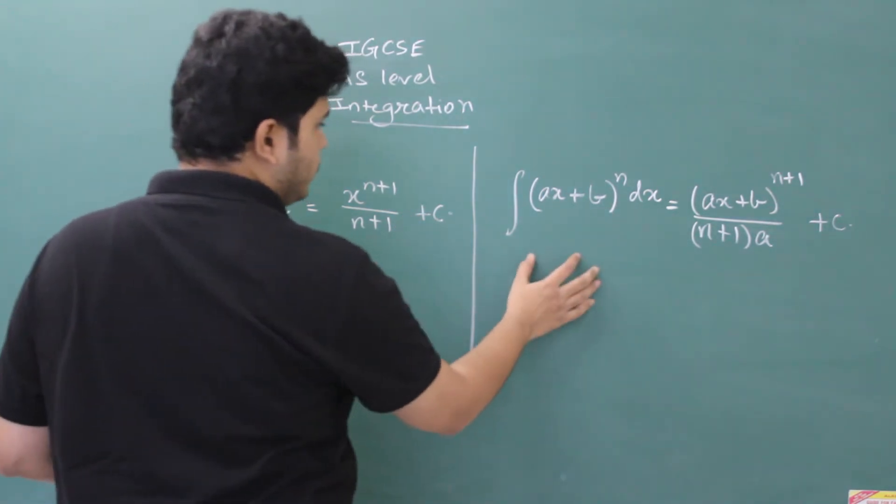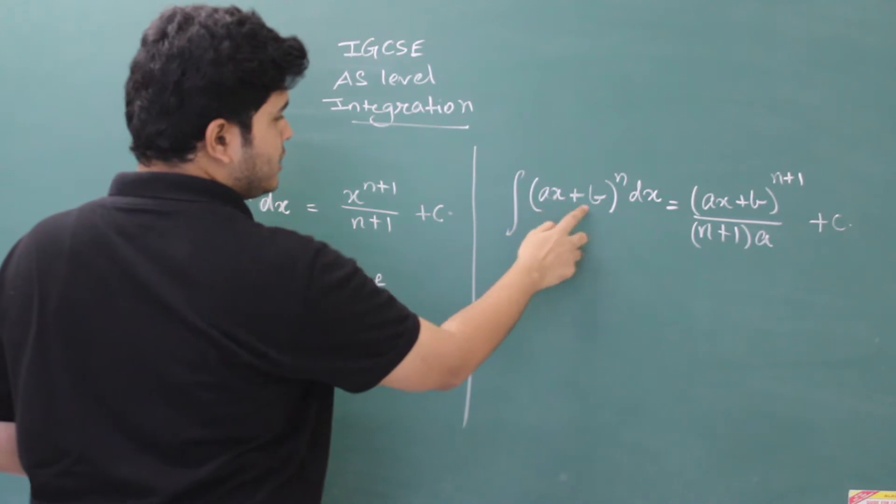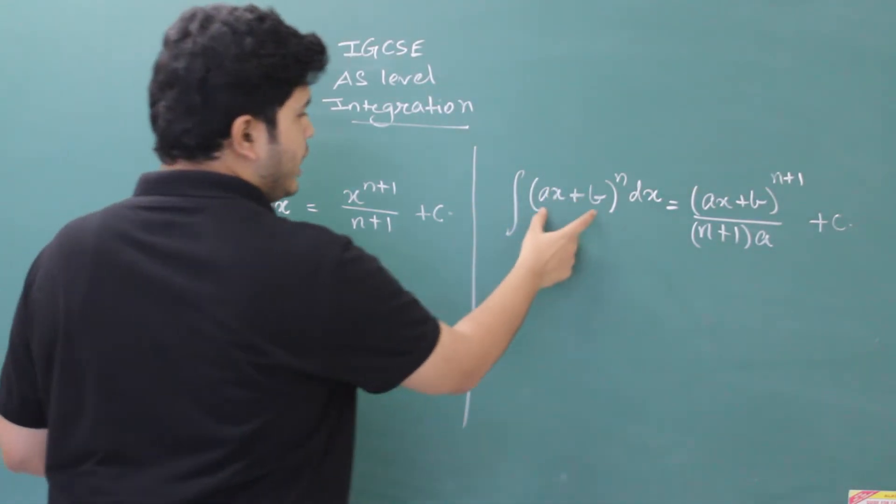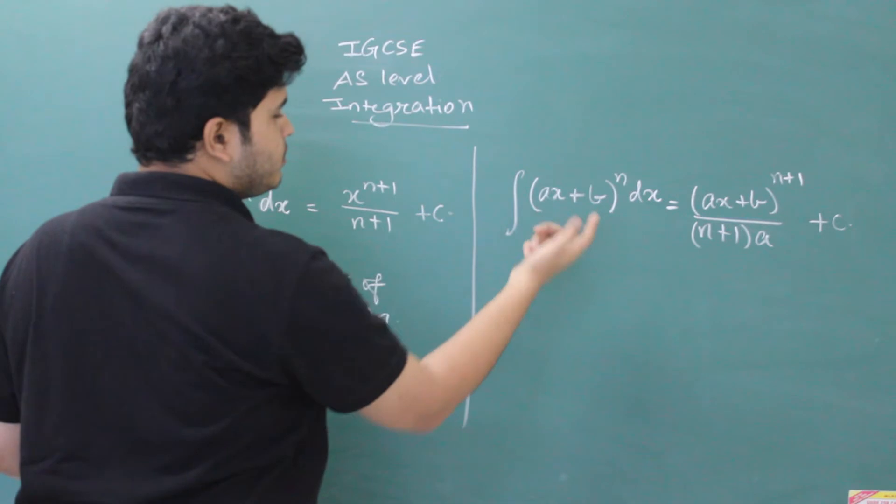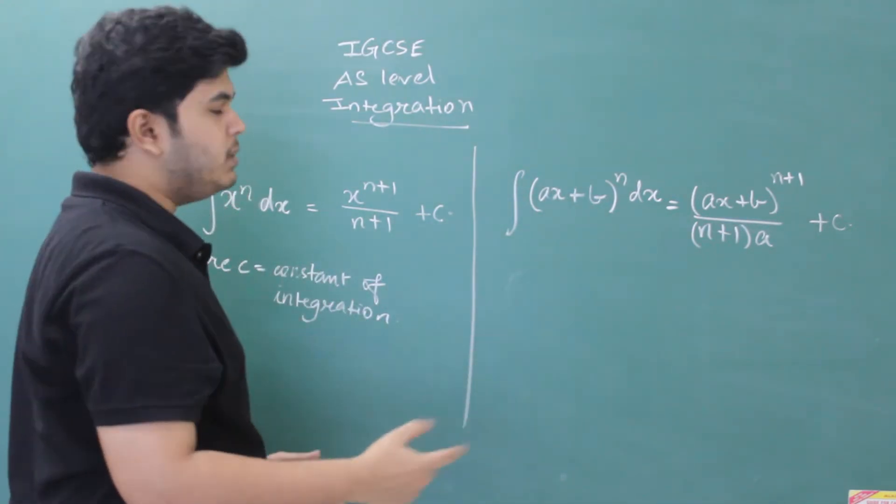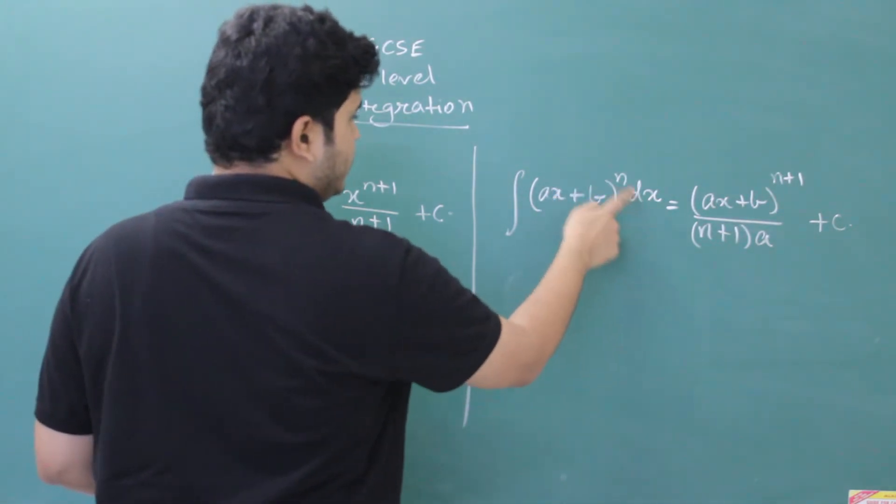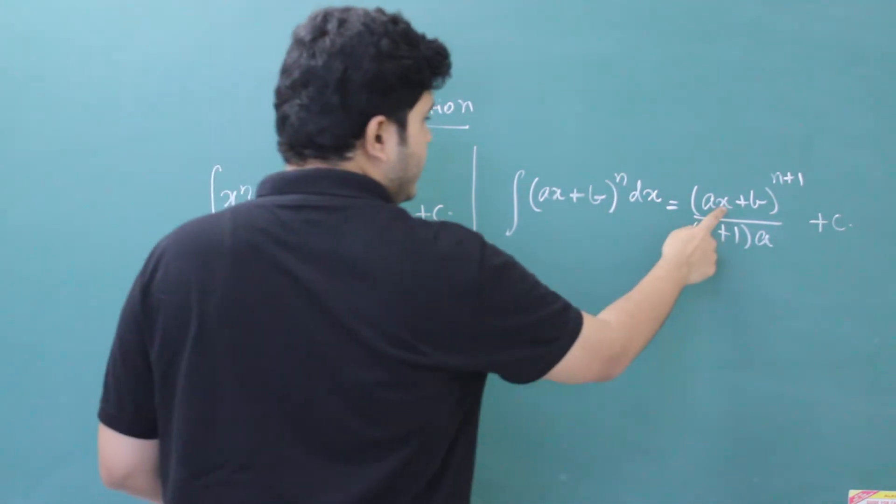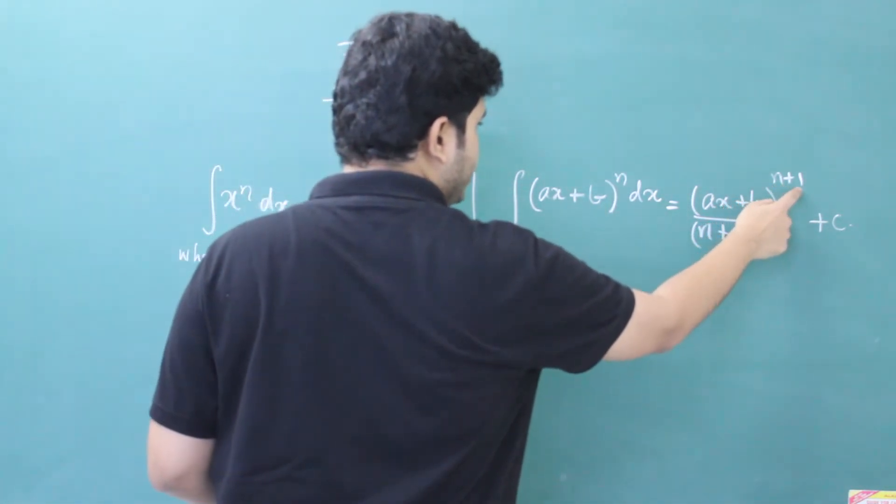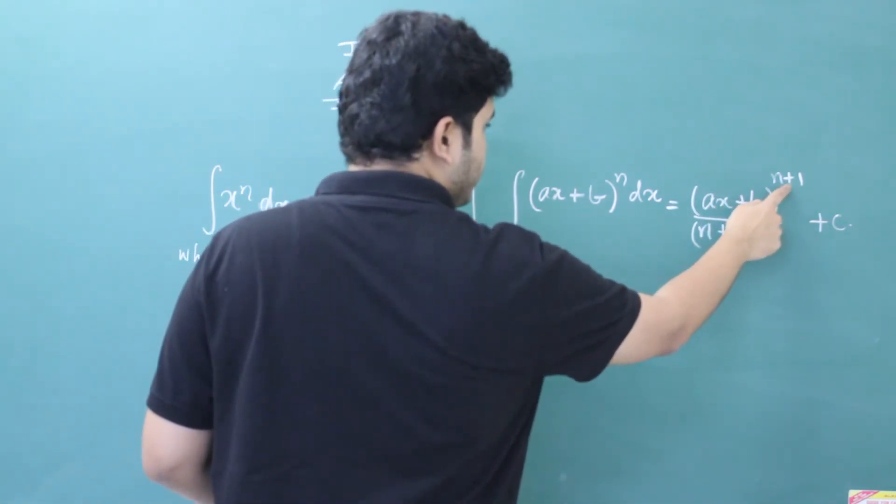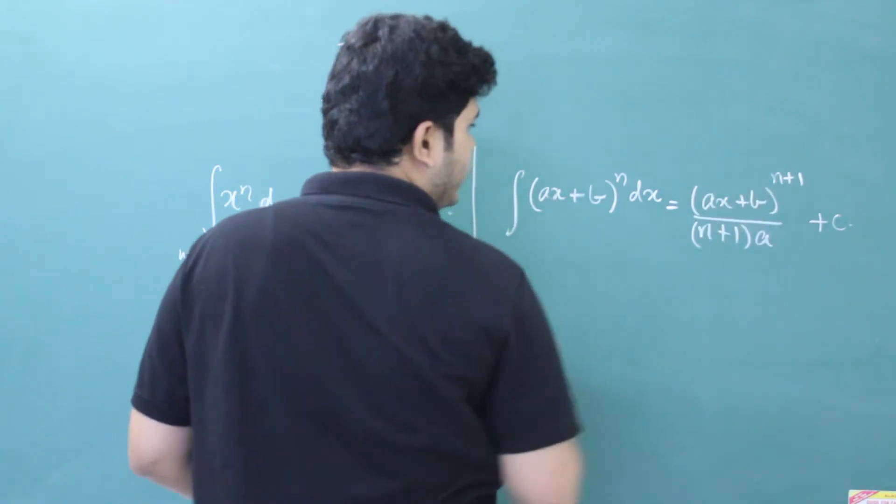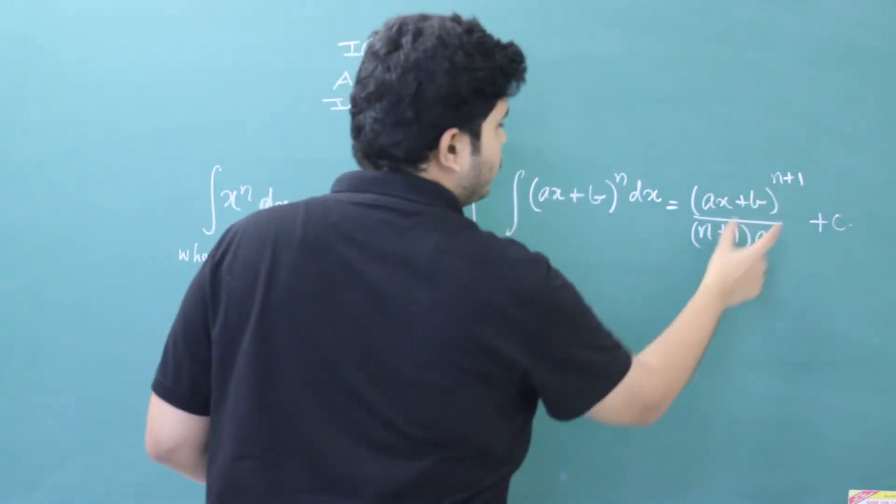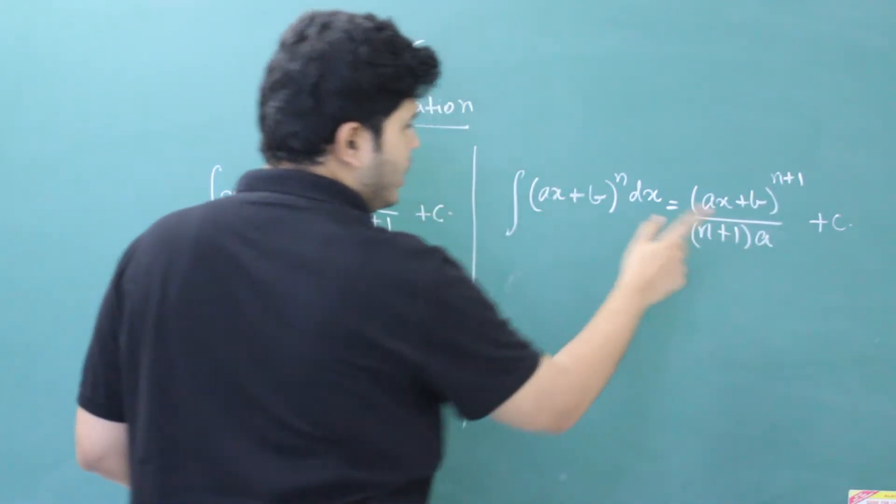Now let's move to another formula. Integral ax plus b, for example you are having any term in this form, ax plus b, that means 2x plus 3 maybe, to the power n is integrated with respect to dx. Then what you will have is ax plus b to the power n plus 1. You will add power by 1 in power of this part, ax plus b, and then you will divide it with the same part, n plus 1.